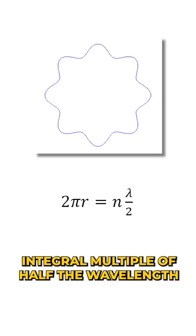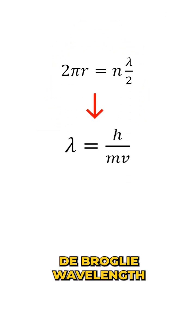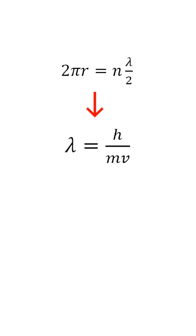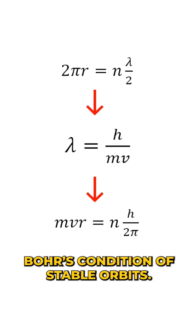Now, imagine the same thing for a circular orbit, where the circumference of the orbit is an integral multiple of half the wavelength. When we plug in the de-Broglie wavelength of an electron into the circumference of an atom, we end up getting the condition of stable orbits.